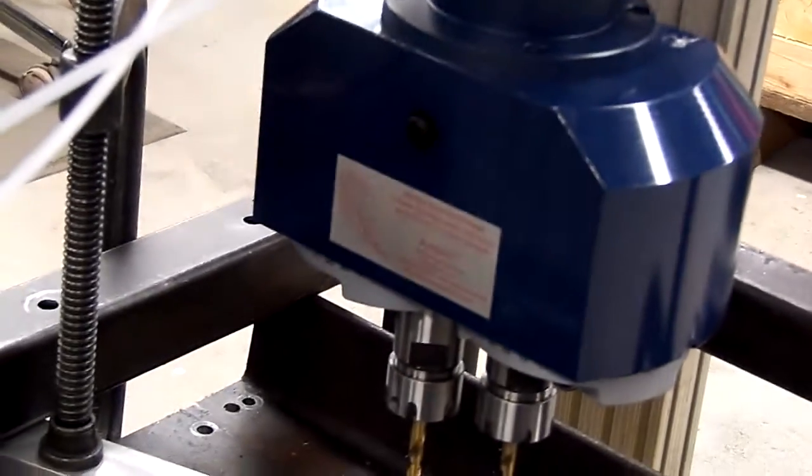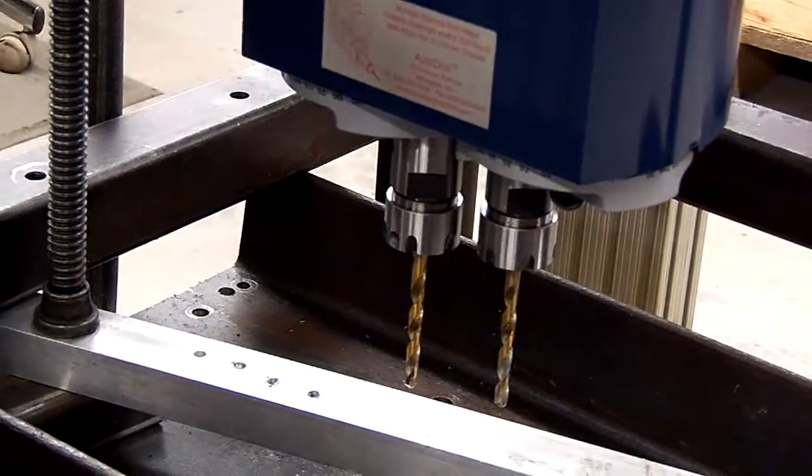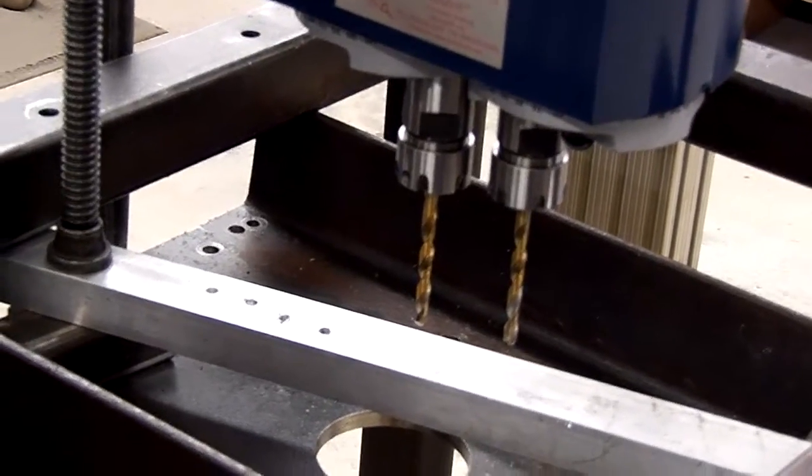The model in front of us here is equipped with an adjustable two-spindle head capable of holding tooling as large as 5/8 of an inch and adjusting its center-to-center distances roughly between 1 and 7/16 and 6.5 inches apart.